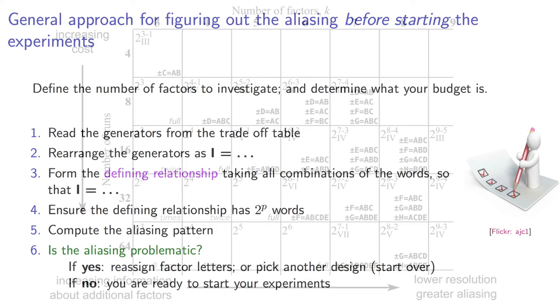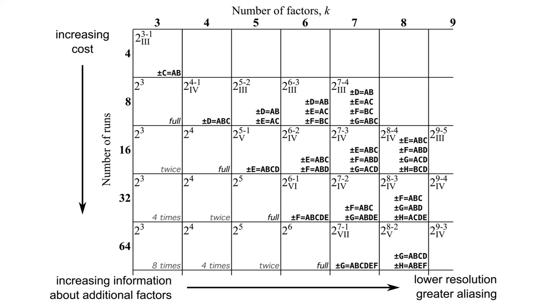The general rule is to pick a design that has the highest resolution possible. That means we should move over to the left of the table. But this is counteracted by our general desire to include as many factors as we can, especially for screening designs. That says we should move over to the right-hand side of the table.